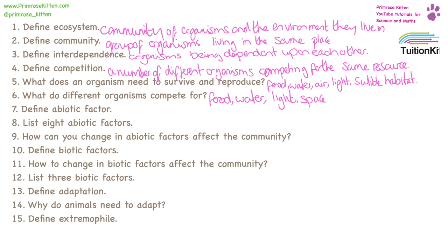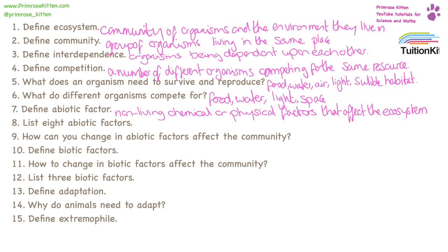Abiotic factors are non-living chemical or physical components that affect living organisms and the ecosystem. There are eight different abiotic factors you need to recall: light intensity, temperature, water levels, pH, iron concentration, wind, carbon dioxide, and oxygen.